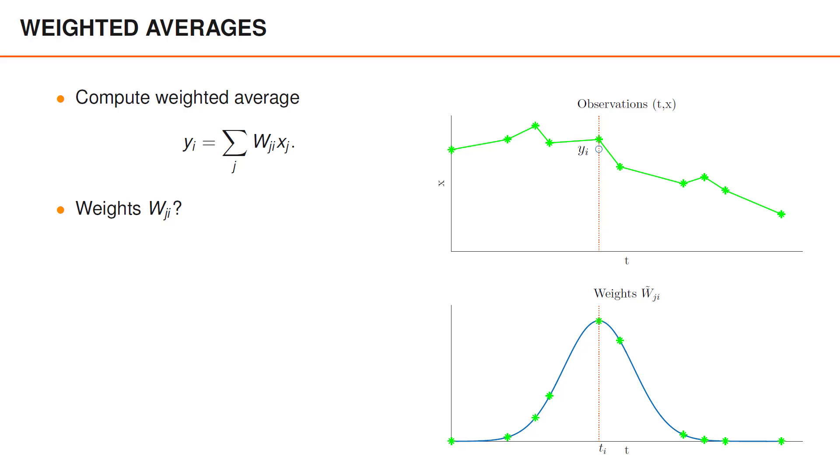Self-attention is fundamentally about computing weighted averages. To gain intuition about weighted averages, we can look at a scalar example. Suppose that we have noisy observations x of some function of interest for different values of t,